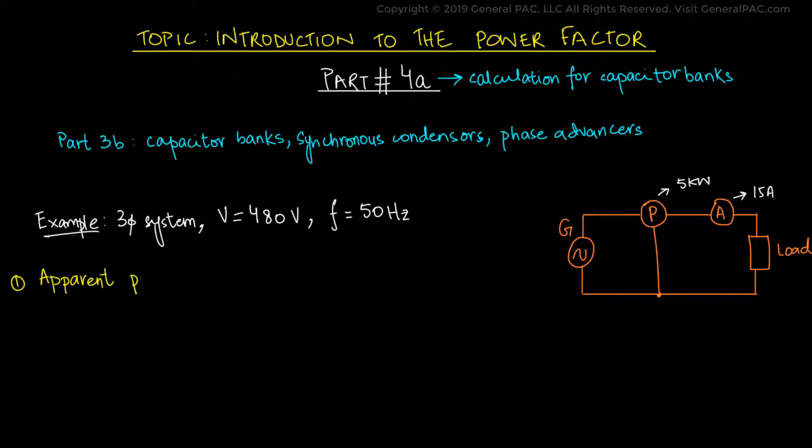We will first calculate the apparent power of the system by multiplying the magnitude of the voltage and current. The apparent power is calculated at 7.2 kVA.